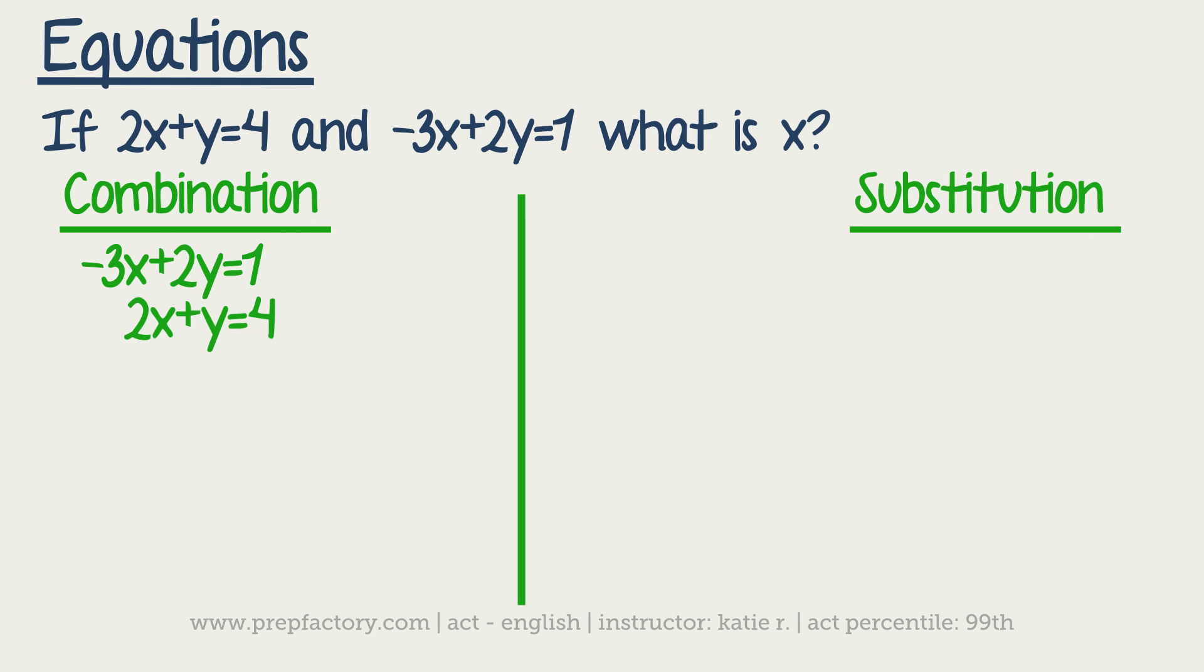If I add those, I'm going to get 3y, which is not what I want. But if I multiply this whole bottom equation by negative 2, then I can cross out my y.